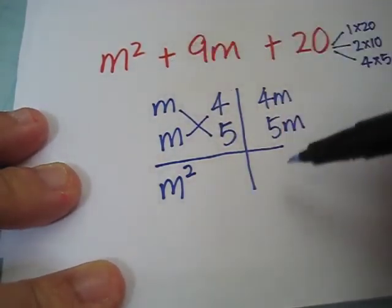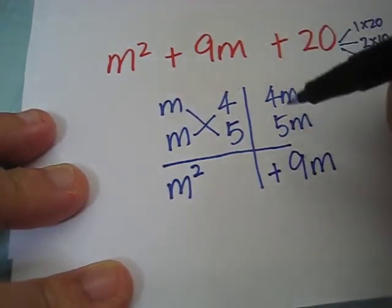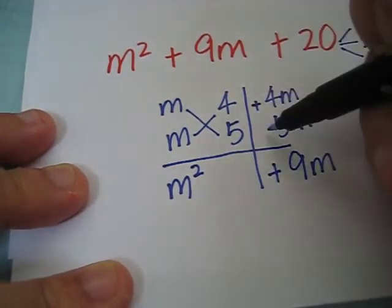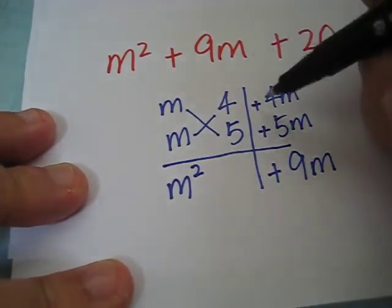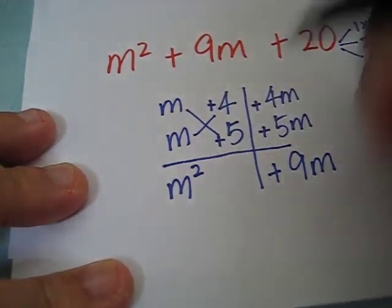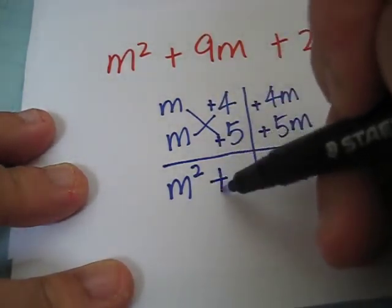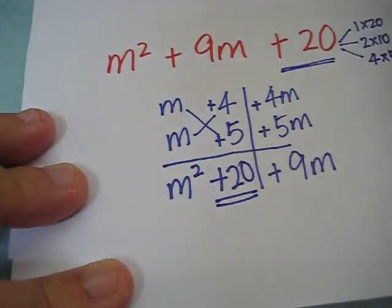We need positive 9m. Which means, I will have positive 4m and positive 5m to give me positive 9m. If this is positive, it means this is positive and this is positive. Multiply together, we get positive 20. Let's compare and check. Yes, it's correct.